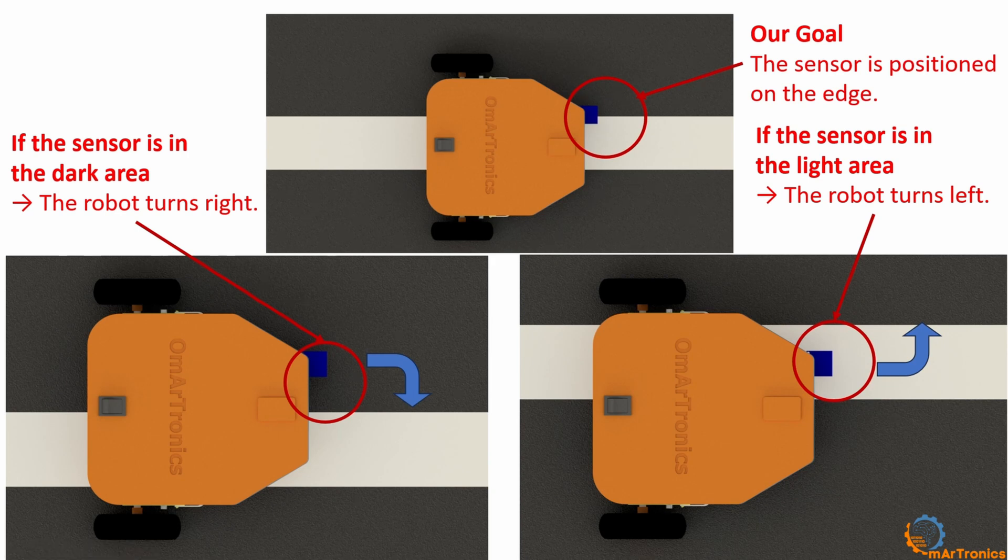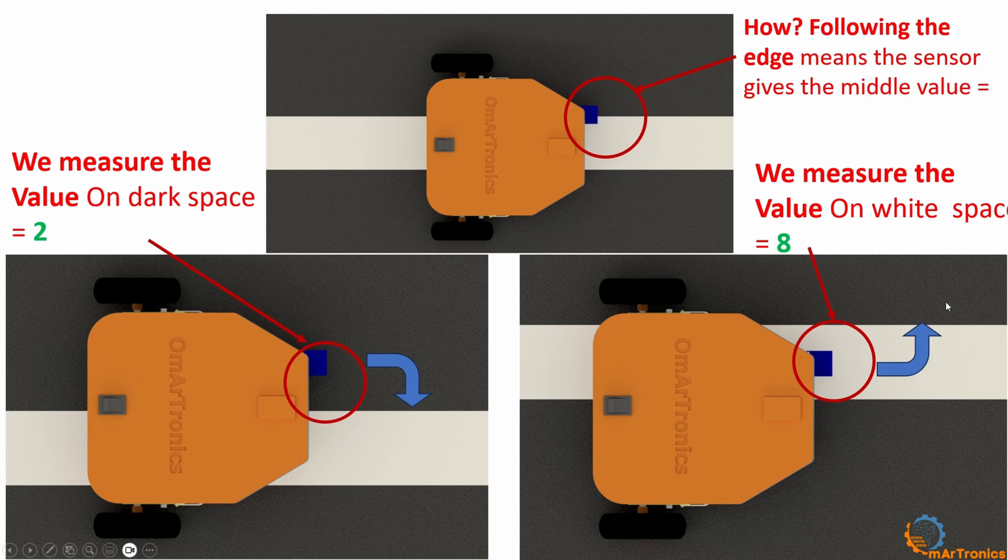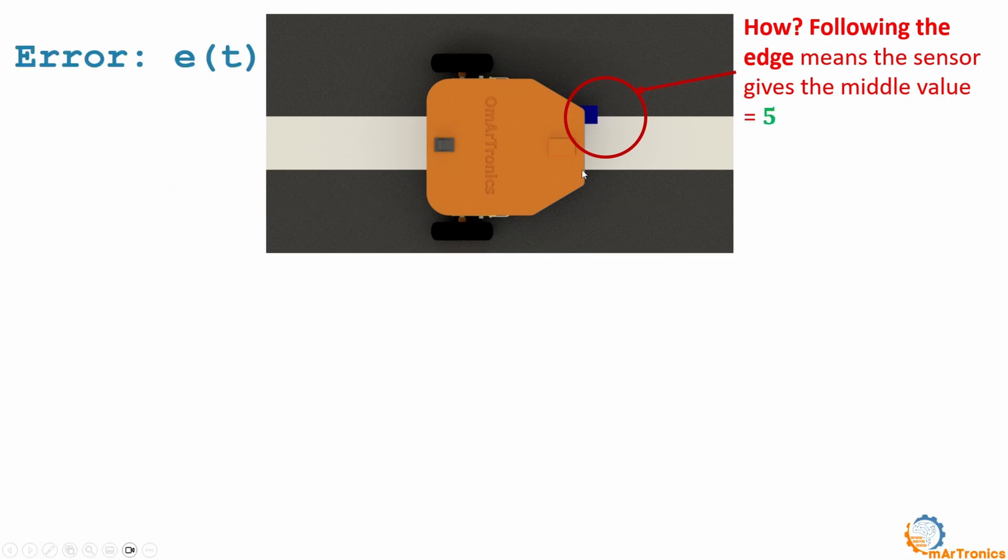So what does this mean for the edge where the surface changes from black to white? If in the dark place there is a value equal to 2, and in the light place there is a value equal to 8, this means that the edge has an intermediate value between the two, so we will add the 2 with the 8 and divide it by 2, and this gives 5. To follow the edge, the sensor must constantly measure a value equal to 5.